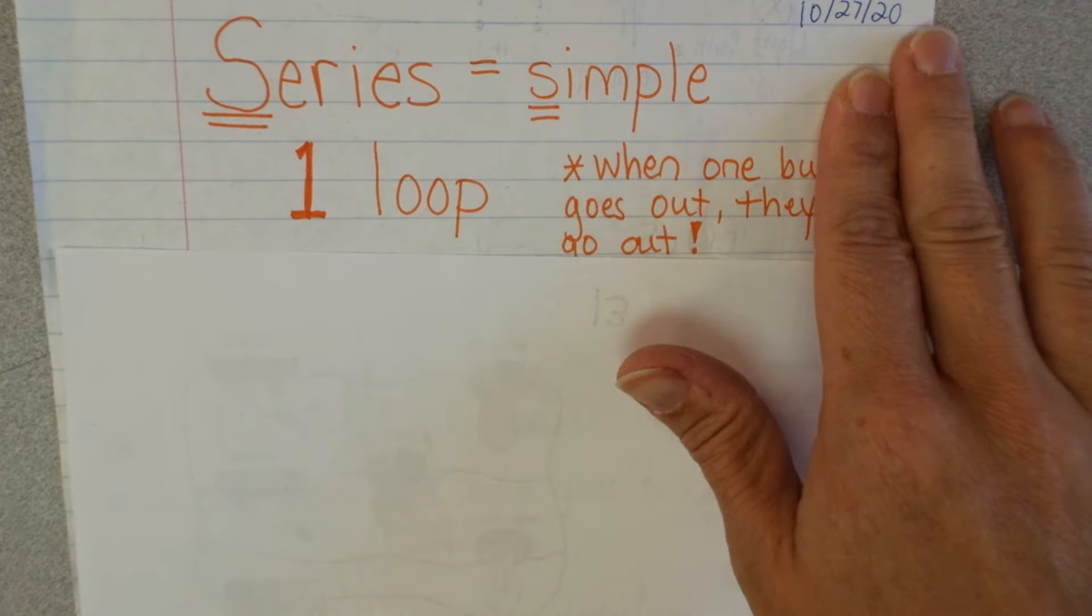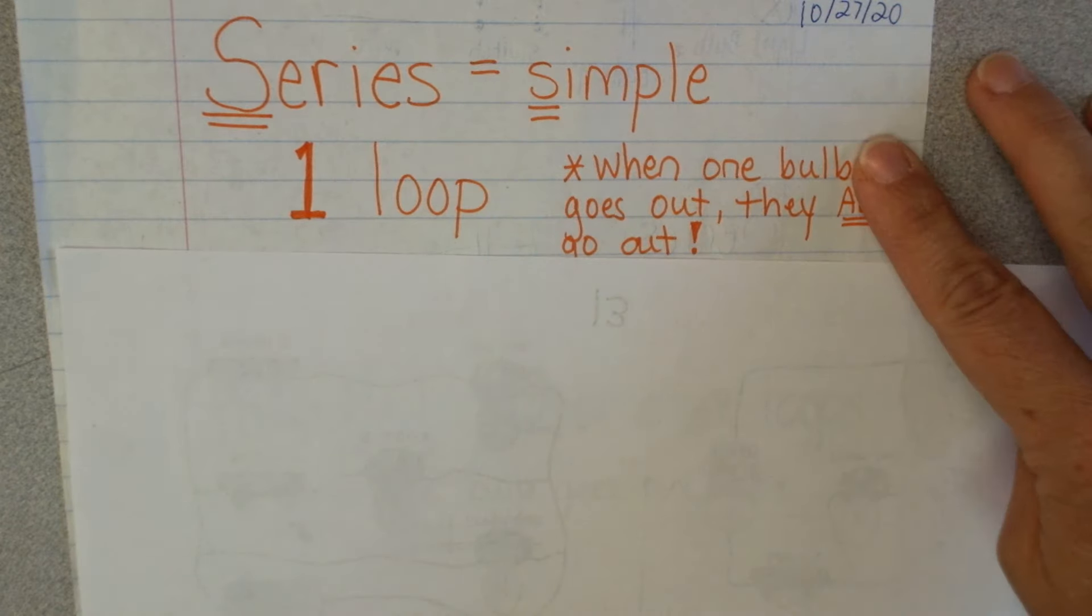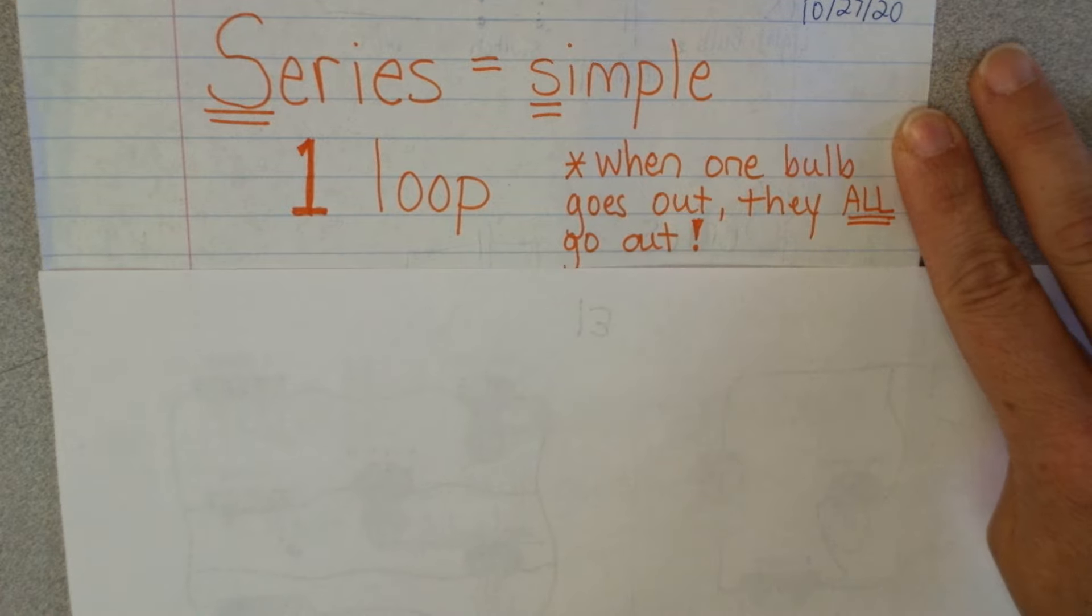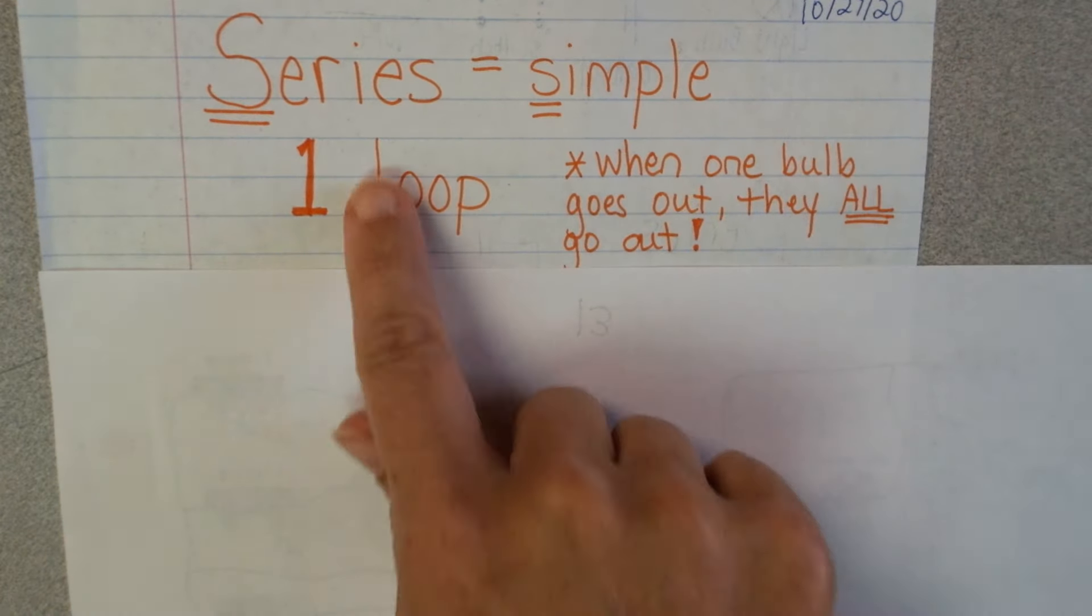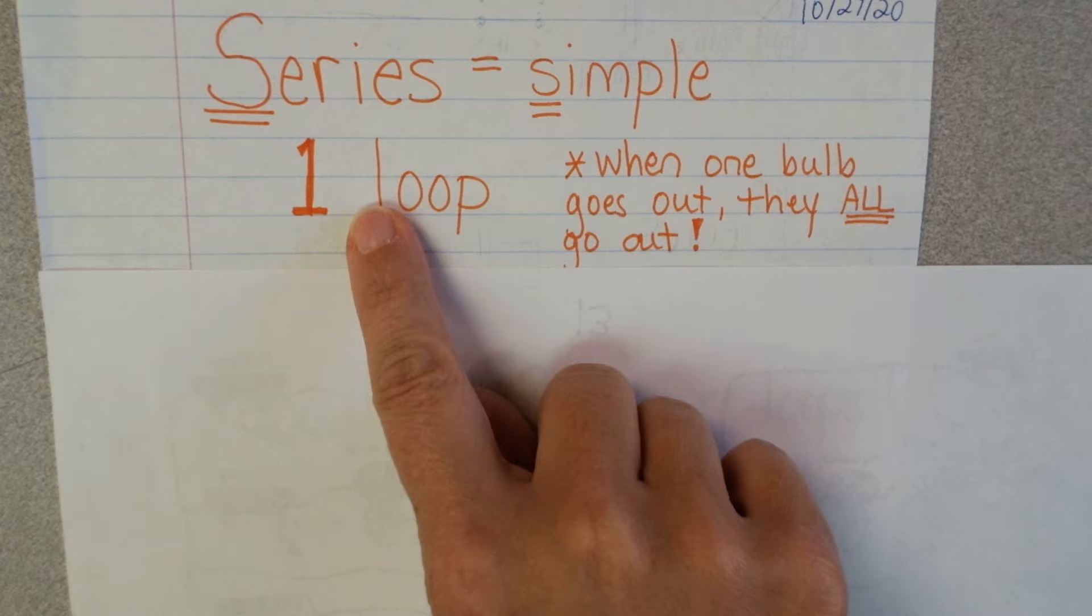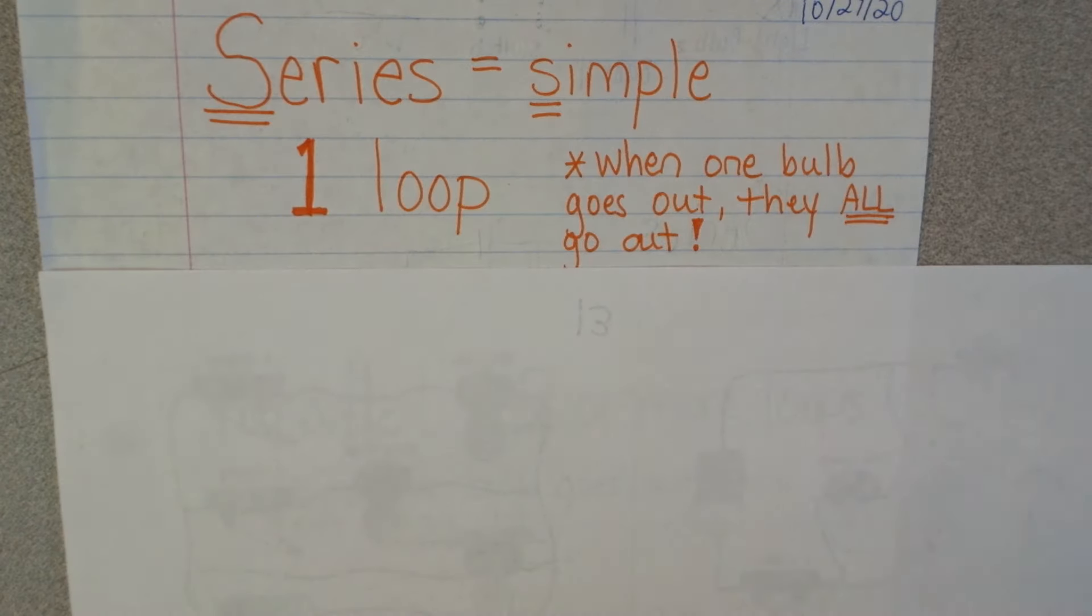The problem with that is when one bulb in that circuit goes out, they're all going to go out. And I'll show you some examples here in a minute. So series is simple, it is only one loop.